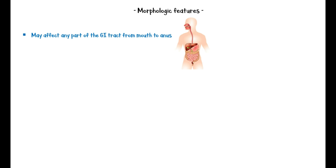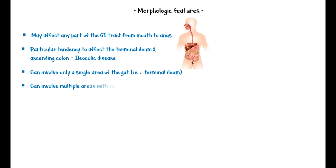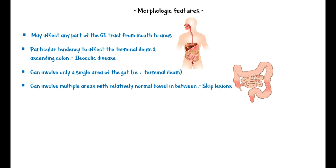Now let's discuss the morphologic features of Crohn's disease. Crohn's disease may affect any part of the gastrointestinal tract from mouth to the anal opening, but has a particular tendency to affect the terminal ileum and ascending colon, known as ileocolic disease. It can involve only a single area of the gut like the terminal ileum, or it can involve multiple areas with relatively normal bowel in between, known as skip lesions.